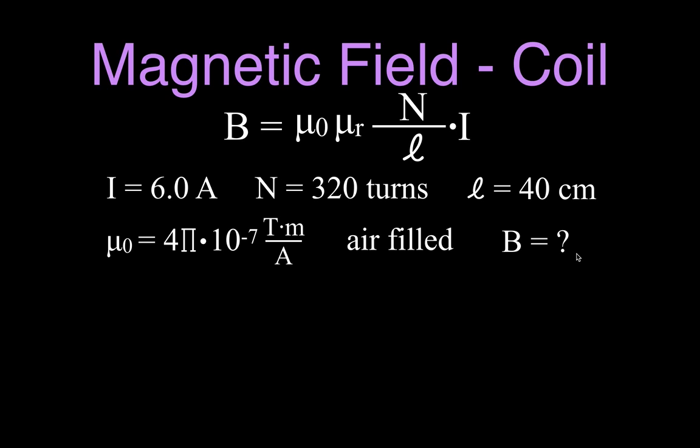So in this problem, we want to know the magnetic field strength. We have an air-filled coil. These are the values for the current, the number of windings, the length, and the permeability of free space. We want to remember, since we have an air-filled coil, that μᵣ is 1 for an air-filled coil.